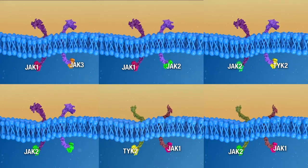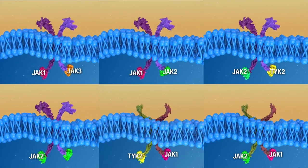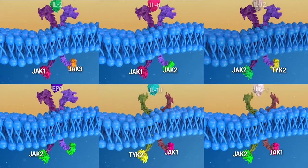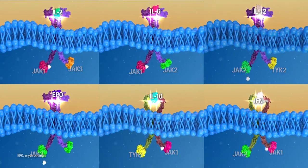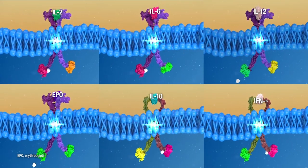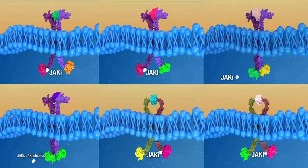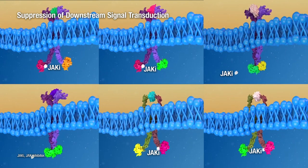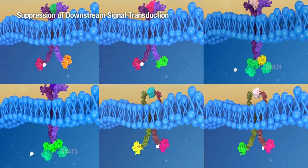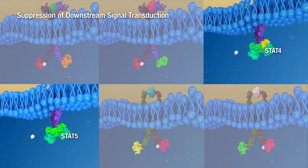Because JAK pathways are centrally involved in the pathophysiology of RA, targeted inhibition of certain members of this kinase family with small molecules affords an avenue to suppress the downstream effects of key pro-inflammatory cytokines, thereby mitigating their pathologic effects.